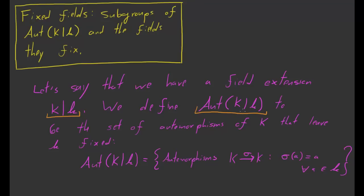So we're going to associate this set of automorphisms to it. The way we define this is to let it be the set of all automorphisms of K which leave k fixed — that is, the set of all automorphisms of big K such that sigma(A) equals A for all A inside of little k. In other words, we're looking at all automorphisms sigma of big K which leave every element in little k fixed, so sigma has to restrict to the identity on little k. And this set of automorphisms is not just a set — it's actually a group.